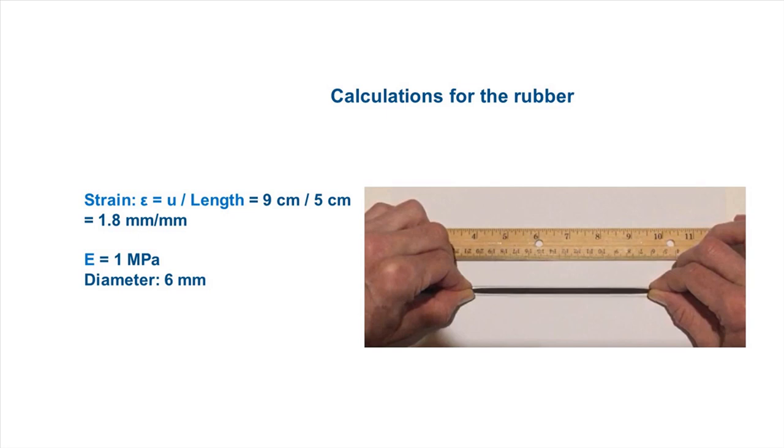The elastic modulus of the rubber is 1 MPa, and the diameter of the rubber cylinder is 6 mm. Using this information and the relationship between stress and strain, we can calculate that the stress in the rubber is 1.8 MPa.